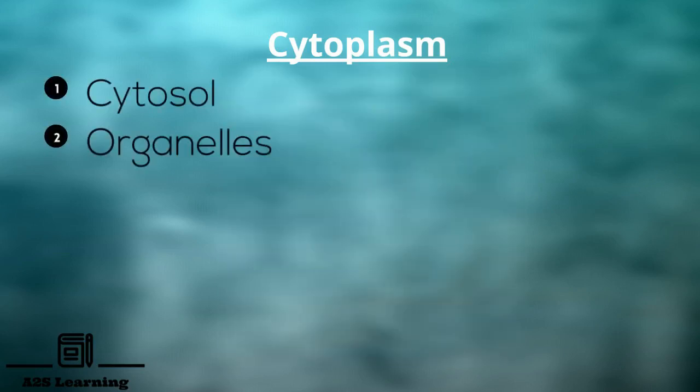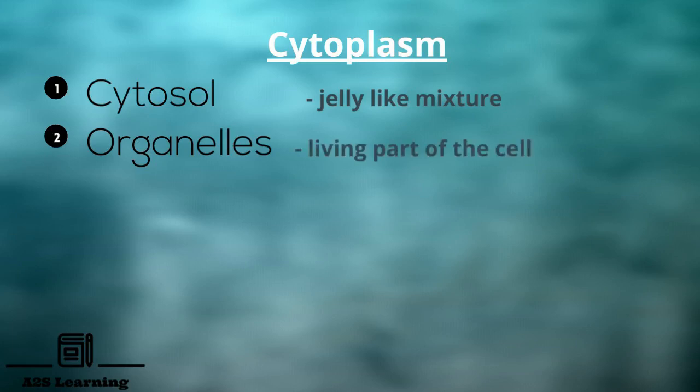The cytoplasm consists of two main components, cytosol and organelles. Cytosol is a jelly-like mixture that consists mostly of water along with proteins, carbohydrates, salts, minerals and organic molecules.